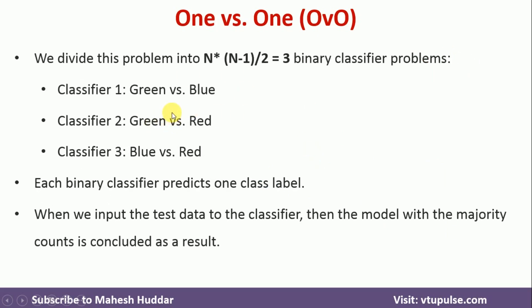For a dataset with classes green, red, and blue, classifier 1 is green versus blue — we consider only data where the class labels are green and blue. Classifier 2 is green versus red, using data with green and red labels. Classifier 3 is blue versus red. Once we have these three classifiers trained, whenever a new example arrives, we pass it to all three classifiers and use majority voting. For example, if the first classifies it as green, the second as green, and the third as red, then since two classifiers voted green, the new example is of type green.